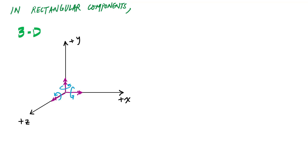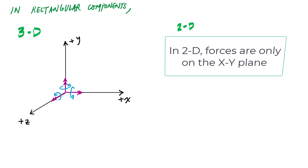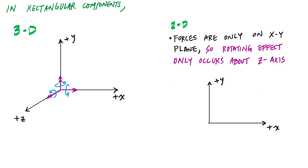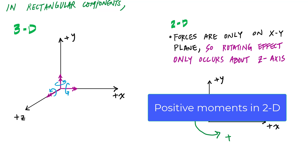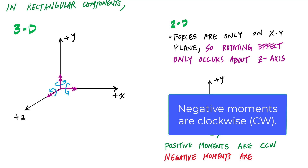Many statics problems can be solved in 2D, where forces are only applied on the XY plane and can only cause a rotating effect about the Z axis. In a 2D reference system, the Z axis sticks out of the page. So a positive moment in 2D has the thumb pointing out of the page, with fingers curling counterclockwise.